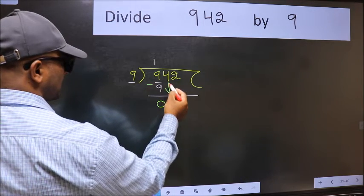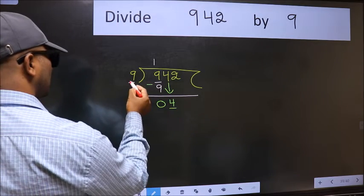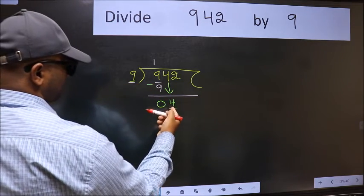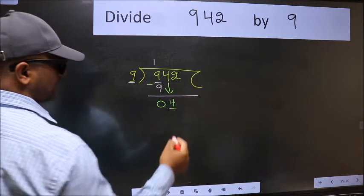After this, bring down the beside number, so 4 down. Now here we have 4 and here 9. 4 is smaller than 9, so we should bring down the second number.